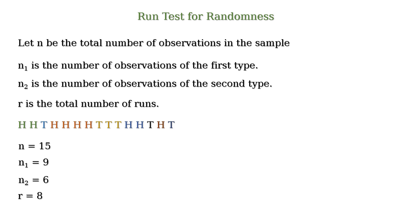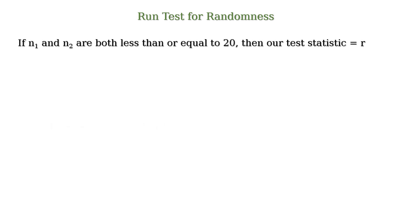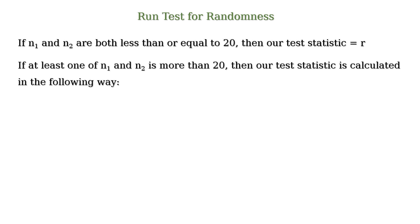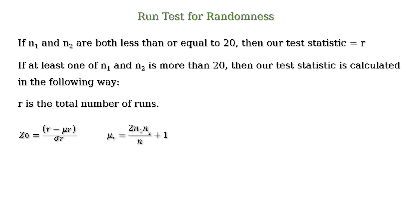Now the test statistic can be calculated in the following way. If n1 and n2 are both less than or equal to 20, then our test statistic is equal to r. If at least one of n1 and n2 is more than 20, then our test statistic is calculated as z0 = (r − μr) / σr, where μr = (2·n1·n2 / n) + 1, and σr = sqrt(2·n1·n2·(2·n1·n2 − n) / (n² · (n − 1))).